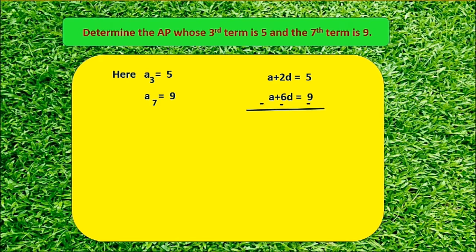Subtract these two equations. We get minus 4D equals minus 4. So D equals minus 4 by minus 4, that is 1.